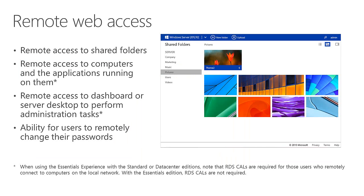Remote Web Access is something we've had for a very long time — previously called Remote Web Workplace. It gives a way to use a web browser to access the server, remotely access shared folders, upload, download, and interact with files, and use it as a gateway to remotely access computers running in the office just as if you were sitting right in front of them. One thing to note: when using the Essentials Edition, there are no additional licensing requirements. But if you're running the Essentials Experience on Standard or Data Center Editions, you will need RDS CALs for users who connect remotely to computers, because RWA leverages the RD Gateway role service of the RDS role.